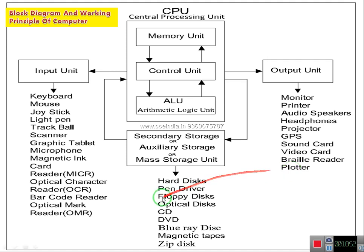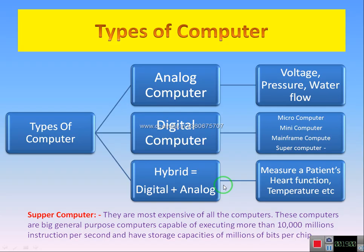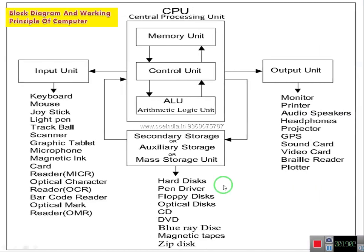Now we can mention the storage device: primary storage, secondary storage, mass storage device. These are all auxiliary storage. Hard disk is updated as a storage device — that is one auxiliary storage. Secondary storage, mass storage device. So hard disk is updated as secondary storage. Pen drive, floppy drive, optical disk.